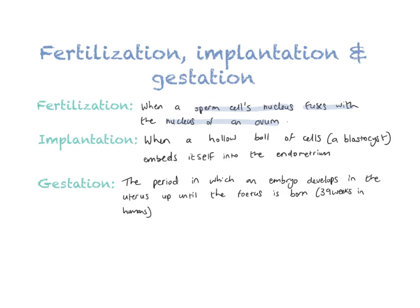After fertilization has taken place you then have implantation. It's important to note what implants in the endometrium — the thing that implants into the endometrial wall is called a blastocyst. You cannot say any other term implants in the uterine wall. The blastocyst, which is a hollow ball of cells, embeds itself into the endometrium. Don't say the egg cell implants, because an egg cell will not implant if it has not been fertilized. If it is not fertilized it will be shed. The ideal term we want is: a blastocyst implants itself.